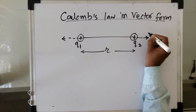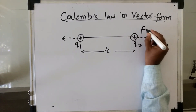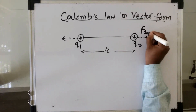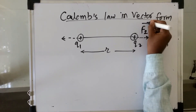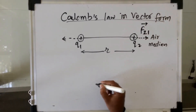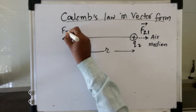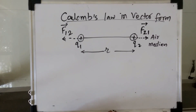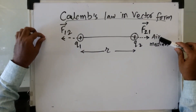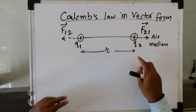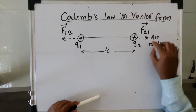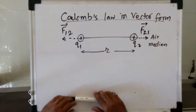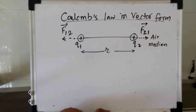So how to denote the forces? The force acting on the second charge due to the first charge is denoted by F21 bar. Similarly, the force acting on the first charge due to the second charge is denoted by F12 bar. Both directions are opposite because both are like charges and they repel each other — so they are directed outward. The two charges are separated by distance r.